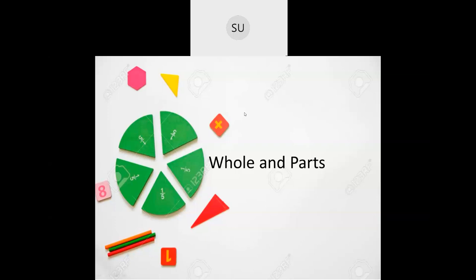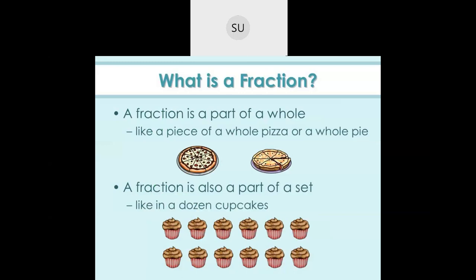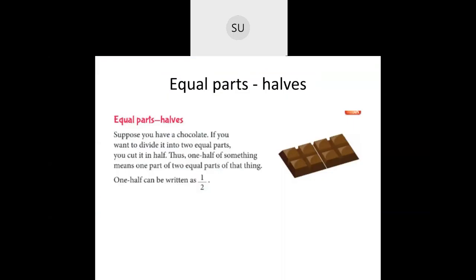In today's class we'll start the new chapter called 'Whole and Parts.' A whole is nothing but a complete object. For example, if you take a pizza, the entire pizza is a whole. When you start making slices and eating them, they become parts. If we take one slice out of a pizza, that is one part of the whole pizza. Any part of a whole is called a fraction.